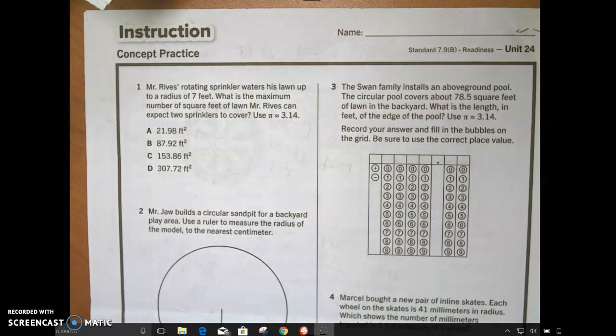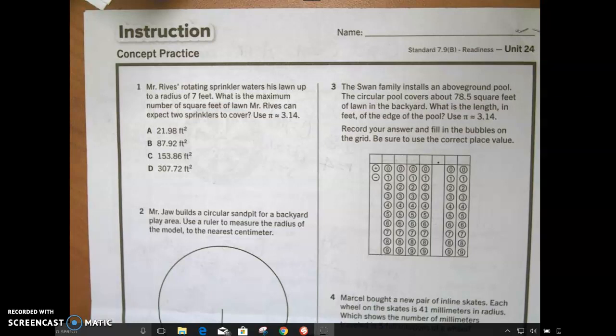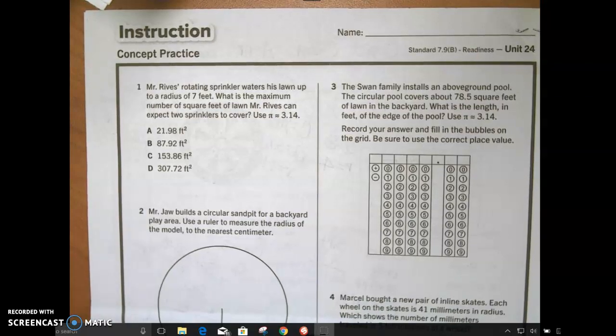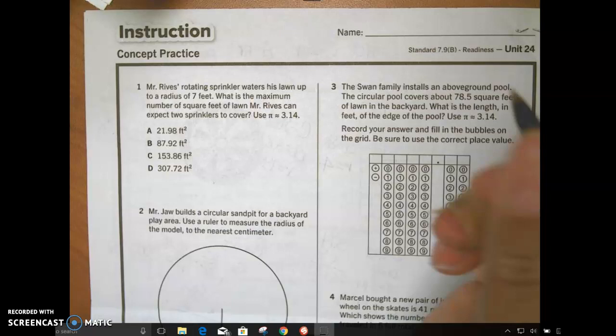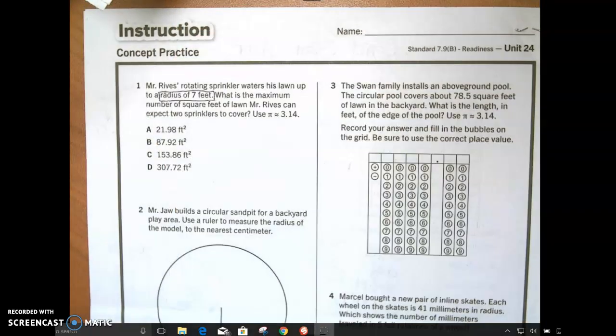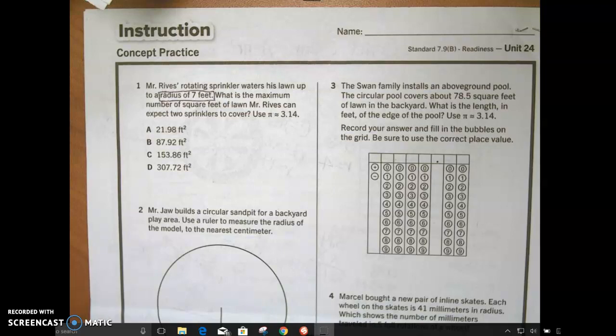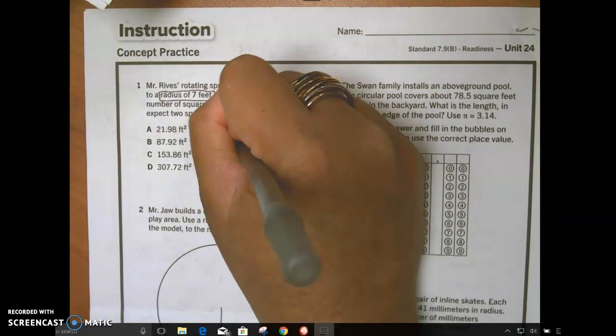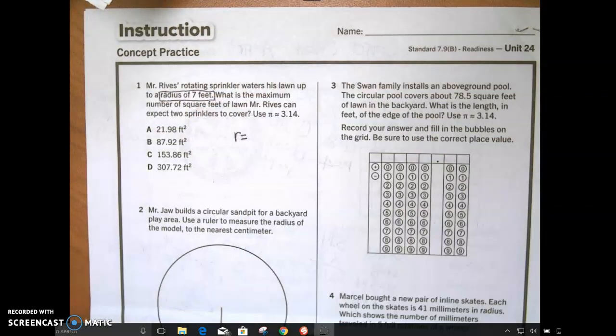Looking at Mr. Revis, this rotating sprinkler waters his lawn up to a radius of seven feet. I've noticed that you are not writing the information that you know from the question here, and you're not underlining, circling, boxing, highlighting the stuff that is important. You have to take out what's important and jot it down so that your answer is a little bit easier to find.